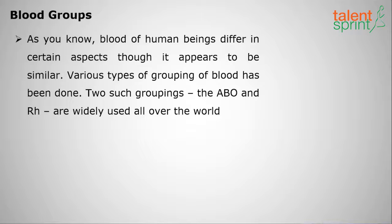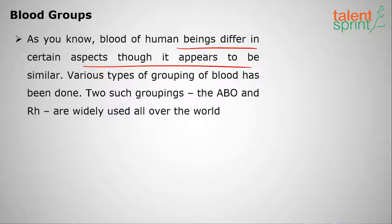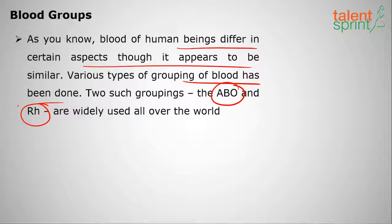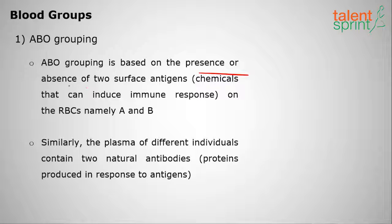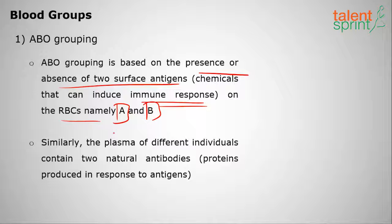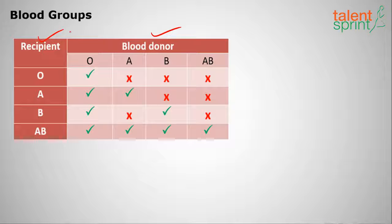Moving on to blood groups: blood of human beings differs in aspects though it appears similar. There are two groupings widely used: ABO and Rh grouping. ABO grouping is based on the presence or absence of two surface antigens, A and B, on the RBCs. The plasma of different individuals contains two natural antibodies produced in response to these antigens.